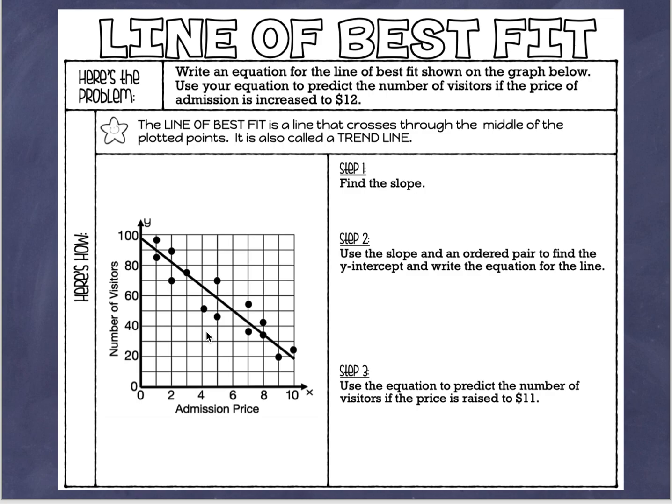With scatter plots we haven't drawn lines up until this point, but with the line of best fit we're going to start drawing some lines. Even if you don't have a copy of this worksheet, you can still follow along and learn. Here's the problem: we're going to write an equation for the line of best fit shown on the graph, then use that equation to predict the number of visitors if the price of admission is increased to twelve dollars.